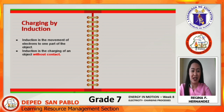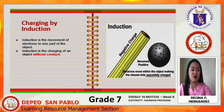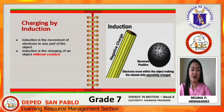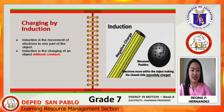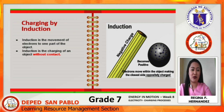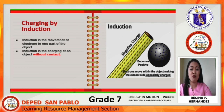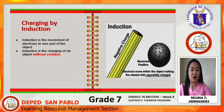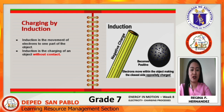Charging by induction is the movement of electrons to one part of an object. Induction is the charging of an object without direct contact. Electrons move within the object, making the closest side positively charged.